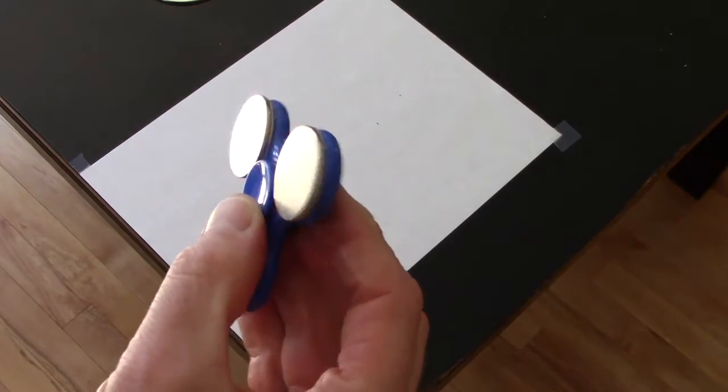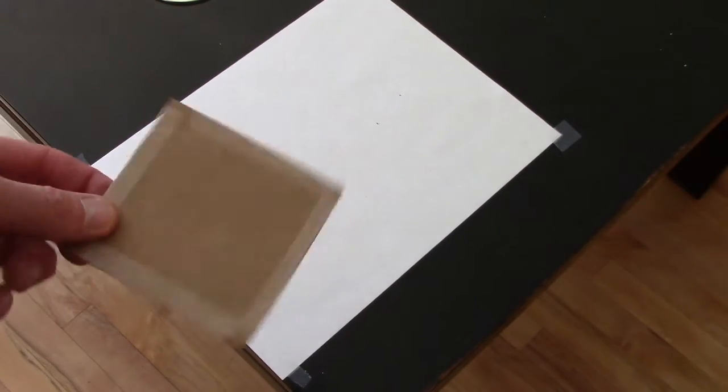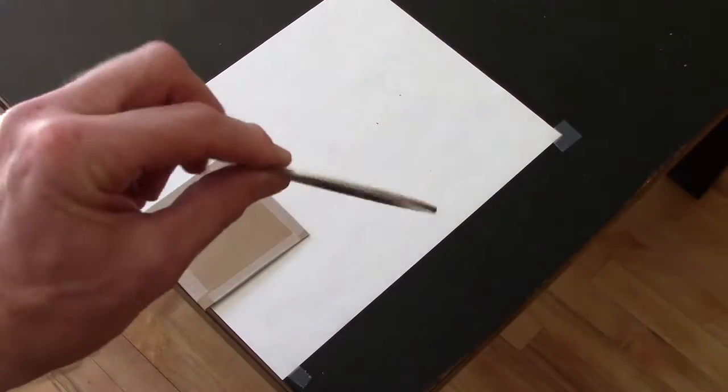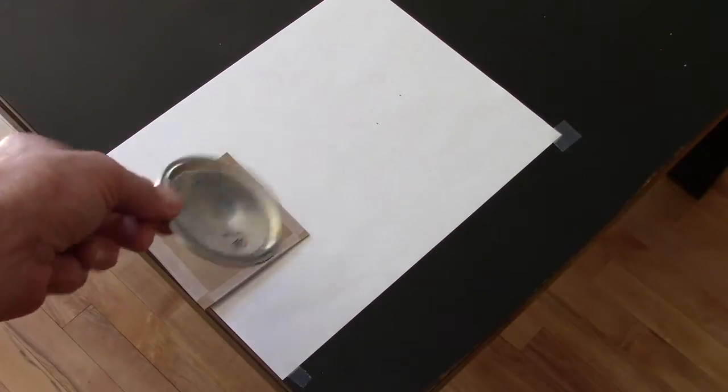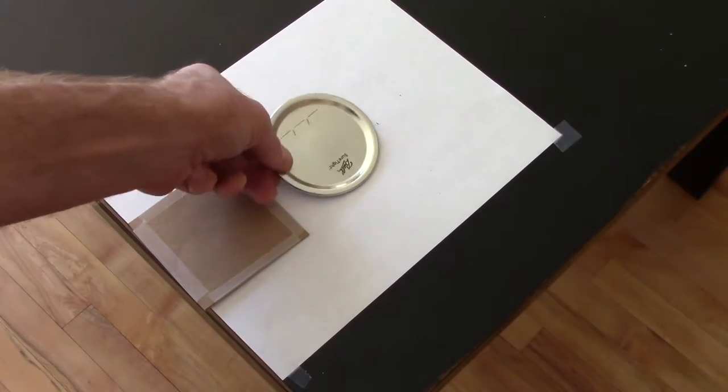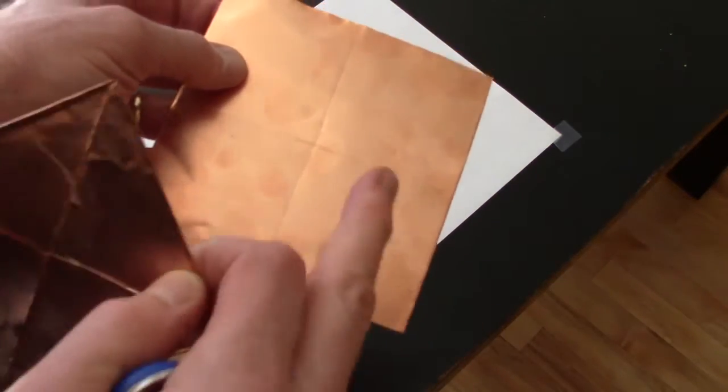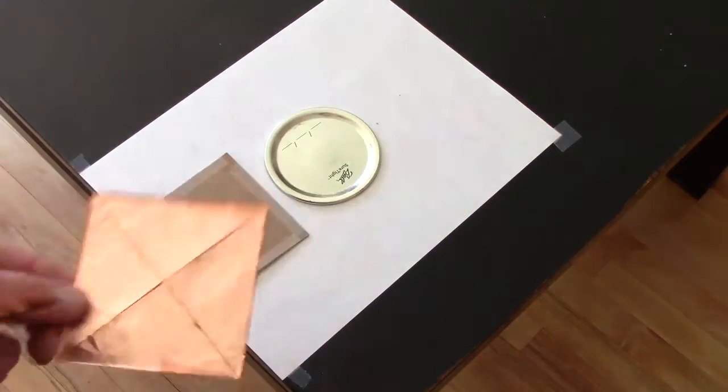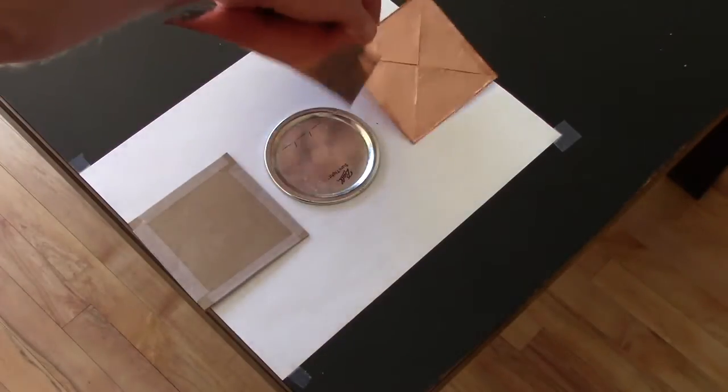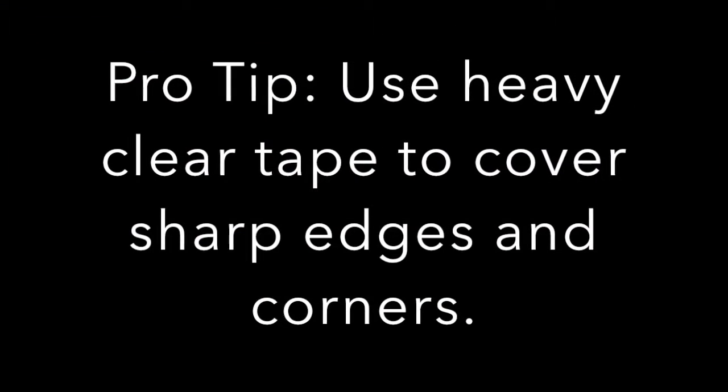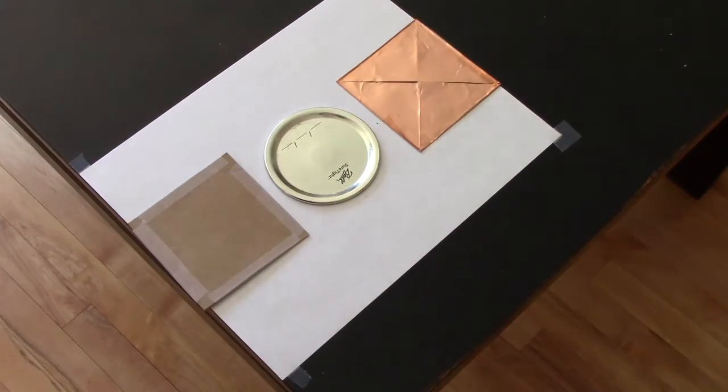After students have looked at magnet-to-magnet interactions, now we're going to look at magnets and how they interact with things that aren't magnets. We got a piece of cardboard here, we have a mason jar lid (a canning lid, it's steel), and then we also have a piece of copper foil that's been folded. This starts out as a five by five sheet, and then if you fold the corners into the middle, you can get about a three and a half by three and a half inch square.